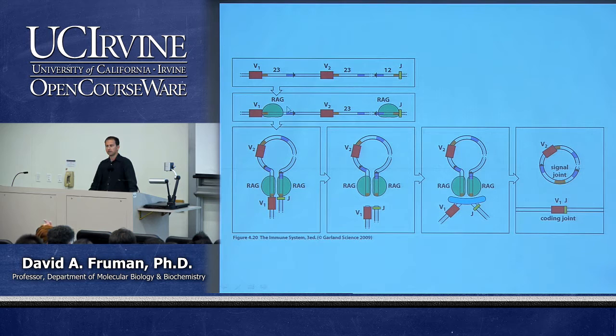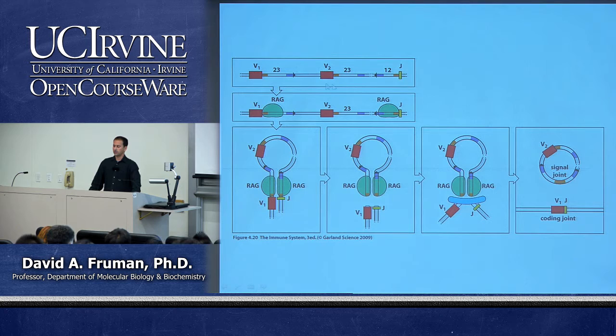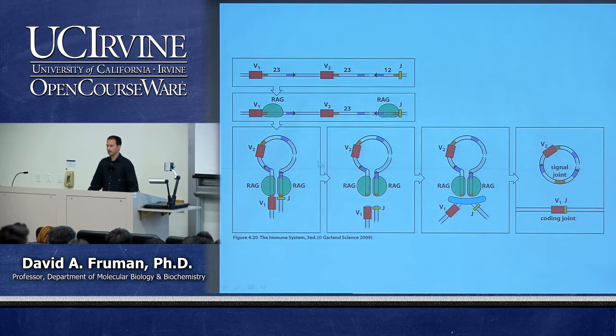RAG1 and RAG2 are only expressed during development of T cells in the thymus — in thymocytes — or in B cells developing in the bone marrow, specifically pro-B and pre-B cells. RAG1 and RAG2 are not expressed in any other cells, which is why the Ig loci remain in germline configuration in every other cell type. Only in developing T and B cells are these proteins expressed that can bind to RSS sequences and initiate the cleavage process.